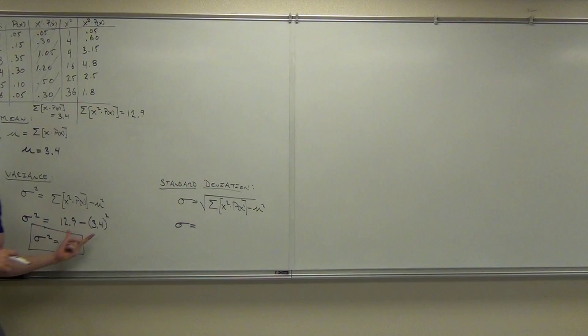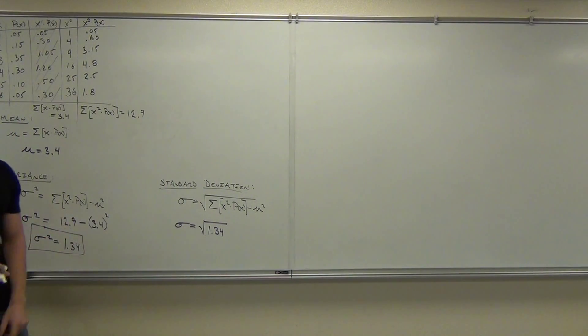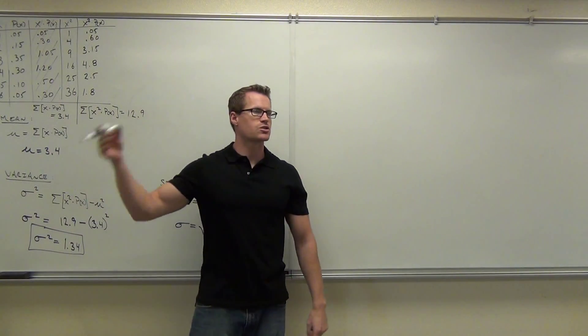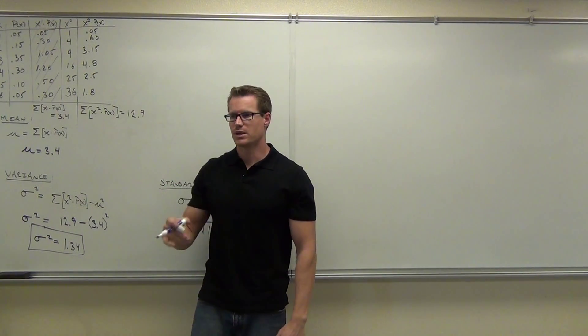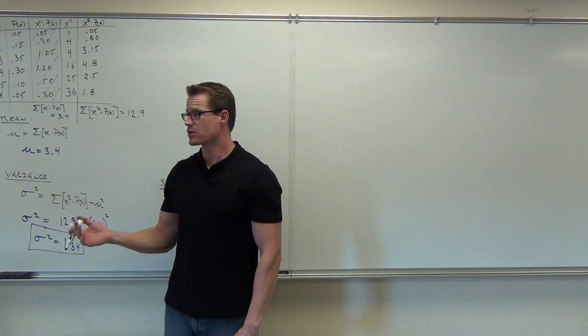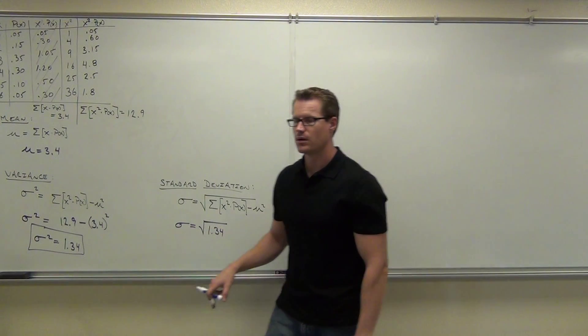The radicand of that square root. So 1.34 should be the radicand inside that square root. All you need to do, once you find the variance, if you have to find the variance, take the square root of that, and that will give you your standard deviation. So let's do that. Take your square root of 1.34, and how much did you get?